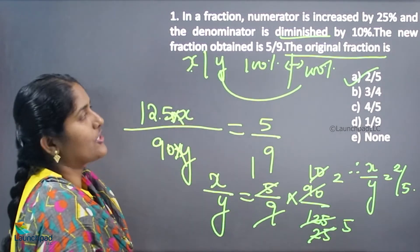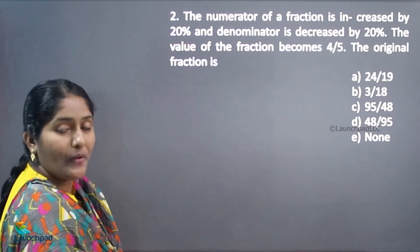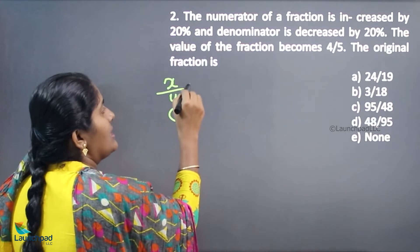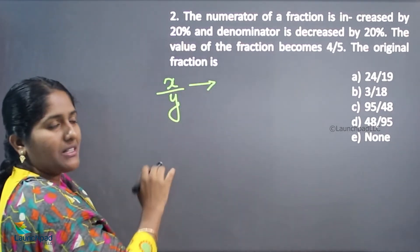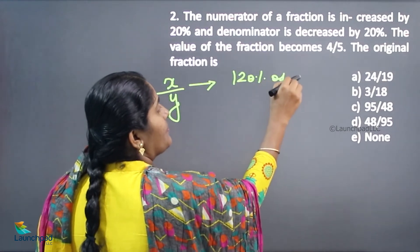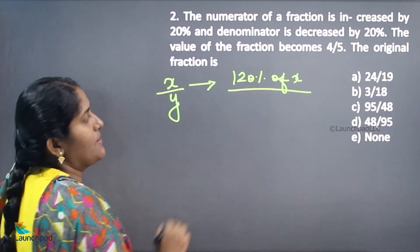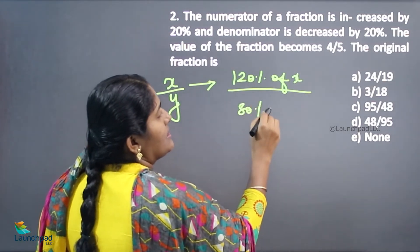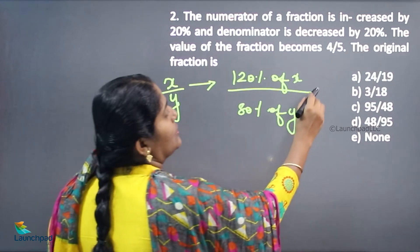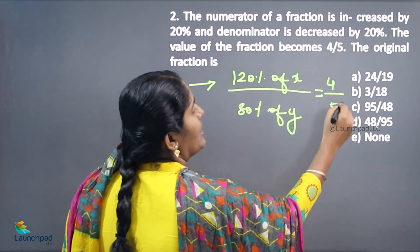Moving on to the next question. The numerator of a fraction is increased by 20%, so 100% increased by 20% gives 120% of x. The denominator is decreased by 20%, giving 80% of y, and the resulting fraction is 4 by 5.